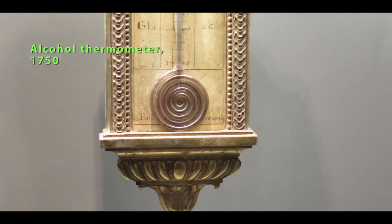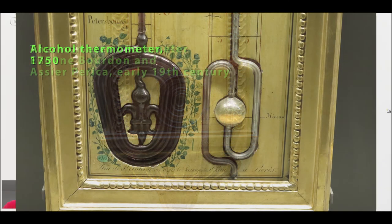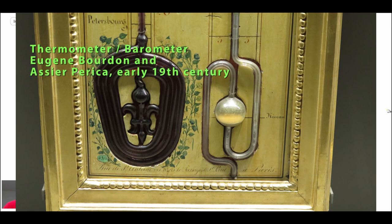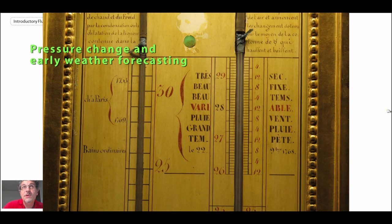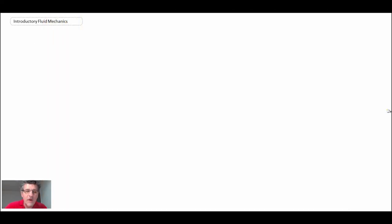This is an alcohol thermometer. Remember, temperature is another measurement that we always want to make. And this is a combination by Borden and Perica that they had both temperature and pressure. And with that, they could forecast weather. So those are some early barometers that were developed between 1750 and 1850.